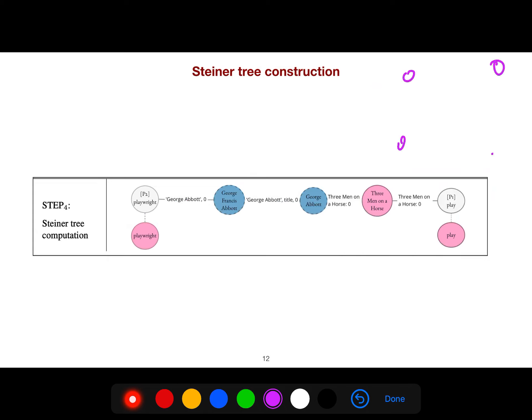The last step is Steiner tree computation. Because we have different pieces of nodes, we want to know how can we connect these different information - what is the minimum amount of edges that we should connect in order to connect all of these nodes. That's why it is interpretable, because we know how these different things are connected to each other.